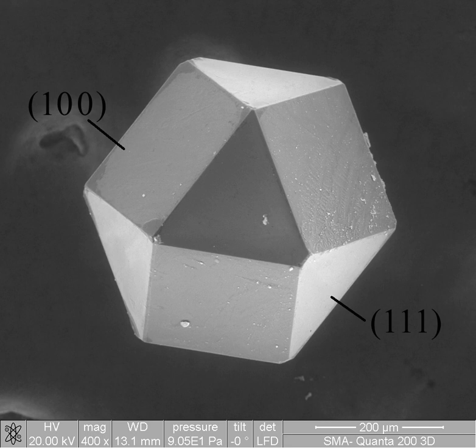Other semiconductor materials include germanium, silicon carbide, and gallium nitride and have various applications.